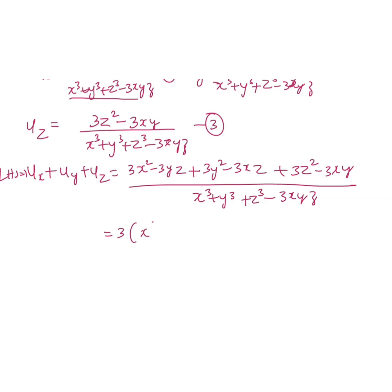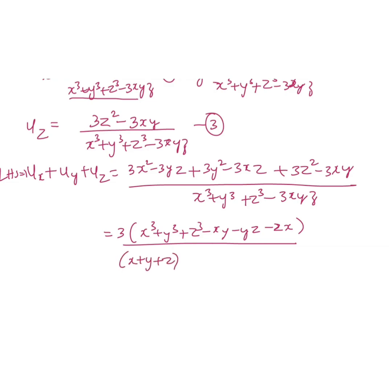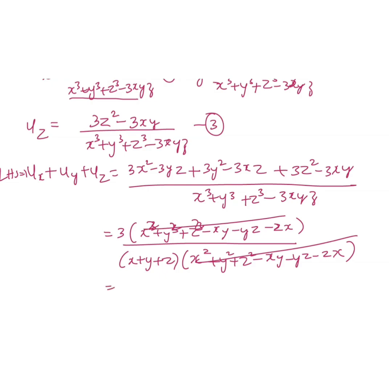Taking 3 as common factor from the numerator gives 3(x² + y² + z² − xy − yz − zx). The denominator x³ + y³ + z³ − 3xyz factors using the identity as (x + y + z)(x² + y² + z² − xy − yz − zx). The common factor (x² + y² + z² − xy − yz − zx) cancels, leaving 3 divided by (x + y + z).